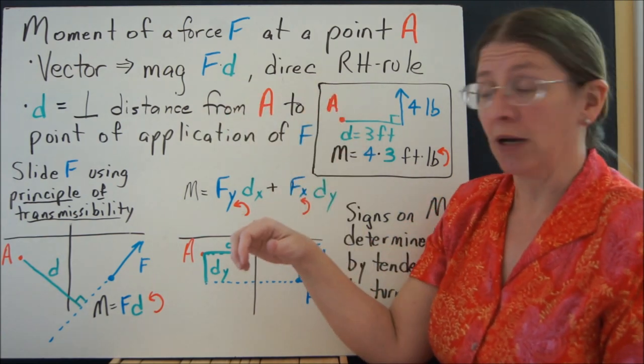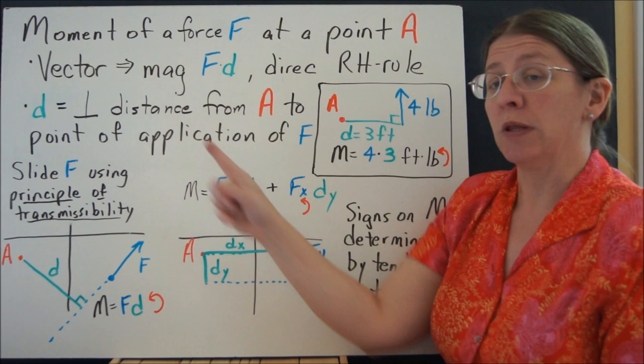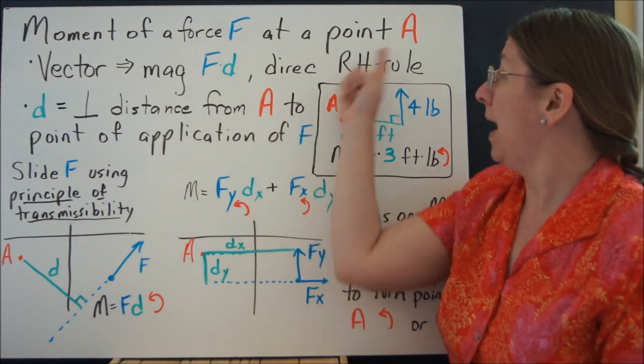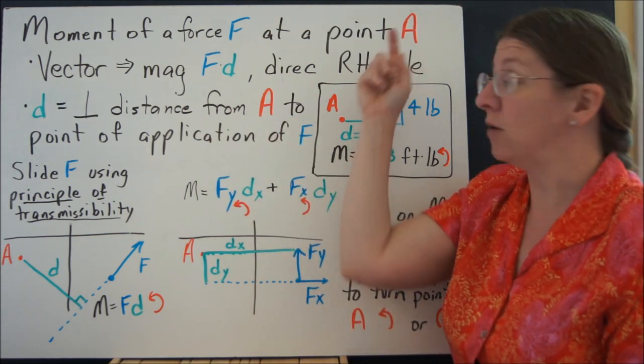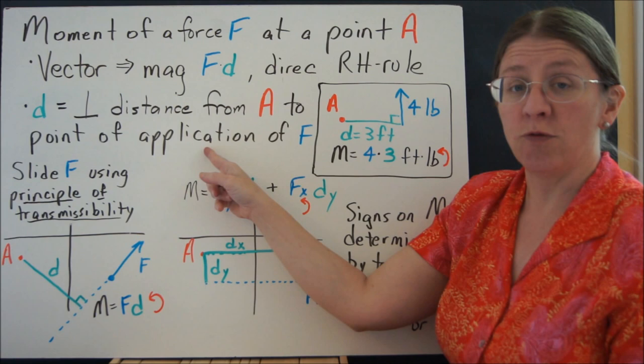The direction will come from your right-hand rule. So this D has to be the perpendicular distance from A, this point you want to take it about, to the point of application of force F.